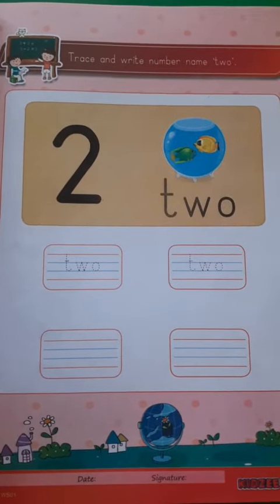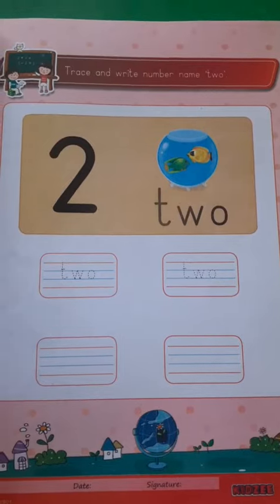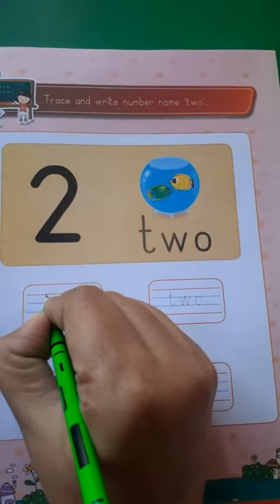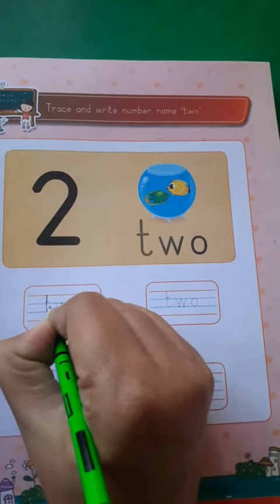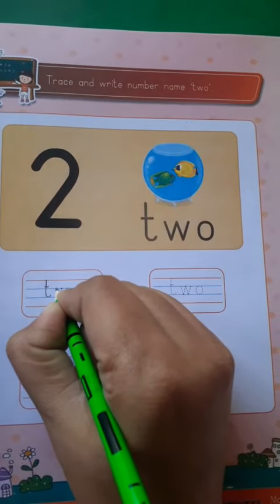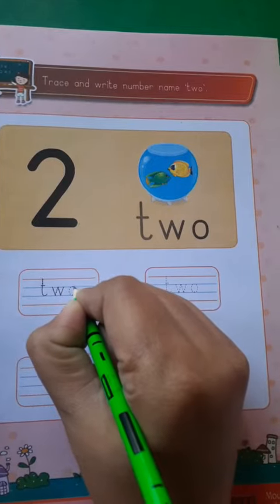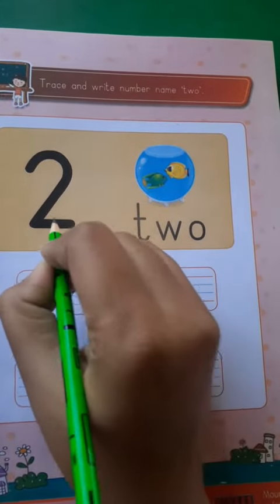First of all, you have to trace number names. I'll show you. Let's start. T-W-O, two.